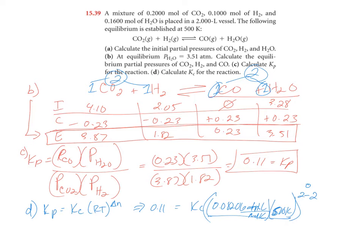So this all reduces to one. So you have one times your k sub c, which is just k sub c. K sub c equals 0.11. That's problem 39.